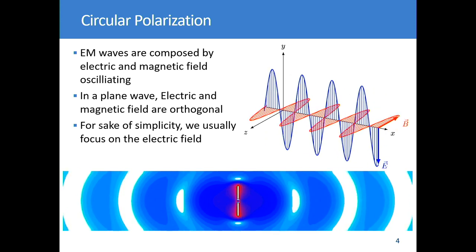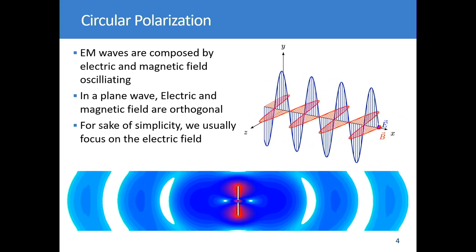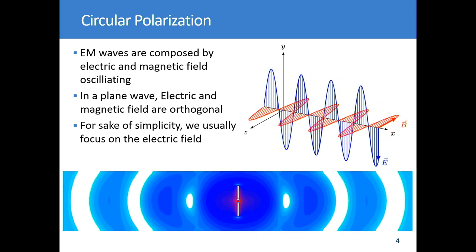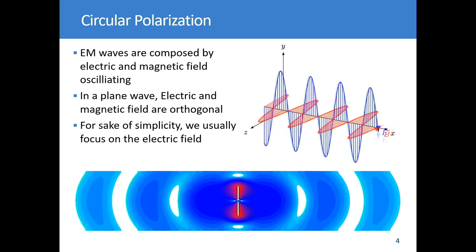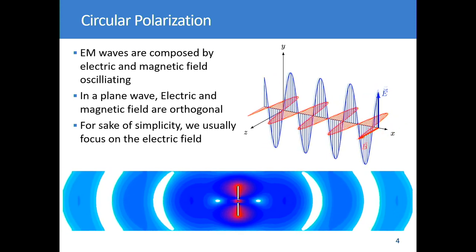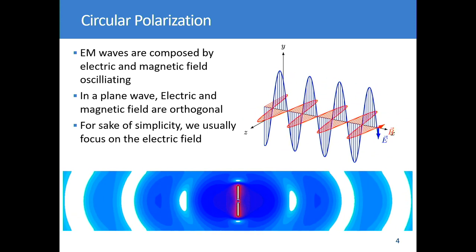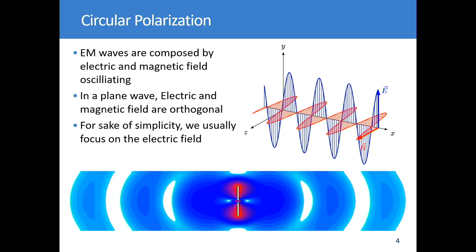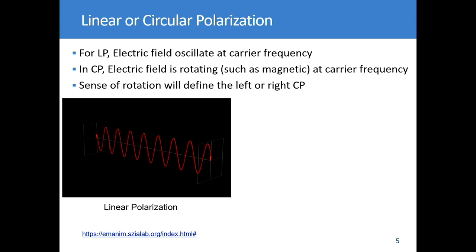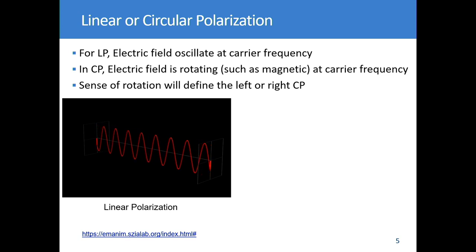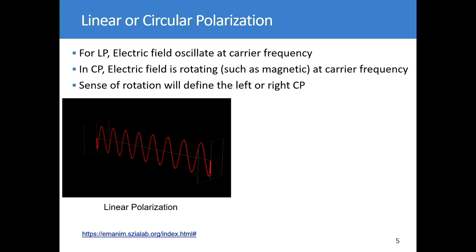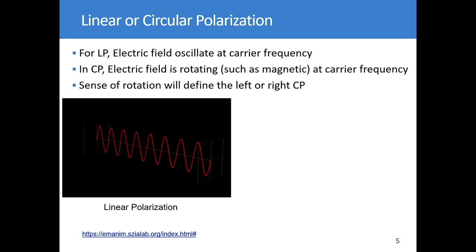For sake of simplicity, when we look at an electromagnetic wave, we mainly focus on the electric part. This is why on the next animation, the magnetic field disappears and you have just the electric field.